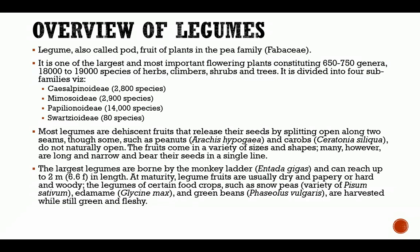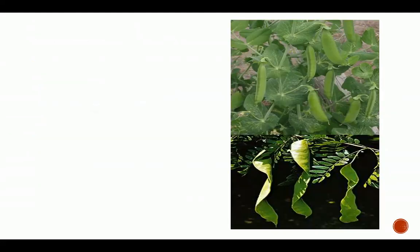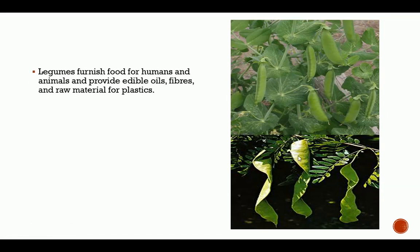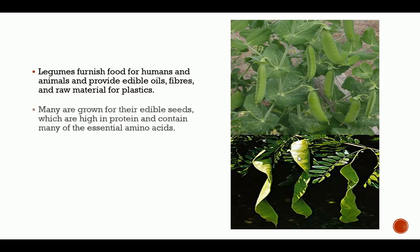Legume fruits are usually dry and papery or hard and woody. The legumes of certain food crops such as snow peas, edamame, and green peas are harvested while still green and fleshy. These are pictures of legume crops — the one here is soybean growing in the field. This is an example of a legume that grows in a papery form.